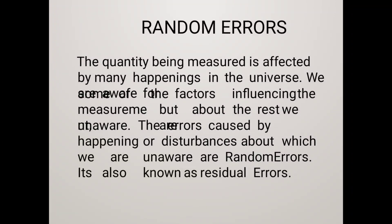The next one is Random Error. Some errors will still result even though systematic and instrumental errors are reduced or at least accounted for. The causes of such errors are unknown, and hence these errors are called Random Errors. These errors cannot be determined in the ordinary process of taking measurements and are generally due to the accumulation of a large number of small effects. These errors are generally small and are of real concern only when a high degree of accuracy is required. Thank you.